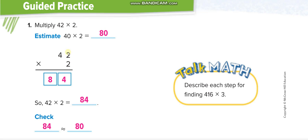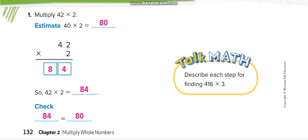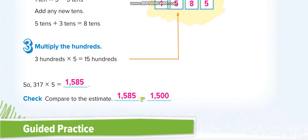42: 2 times 2 equals 4, and 2 times 4 equals 8, so 84. Closer to the estimate, so reasonable. Here also they are doing it closer to the estimate.